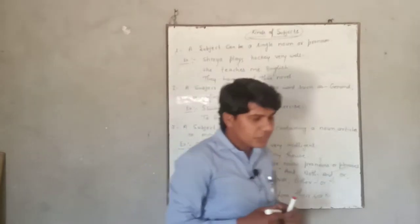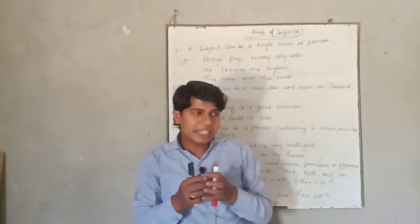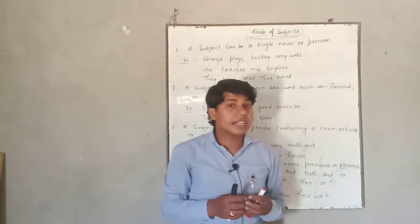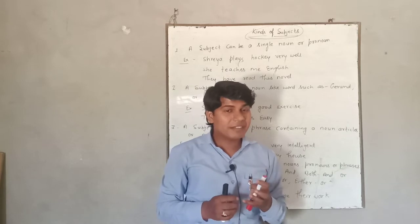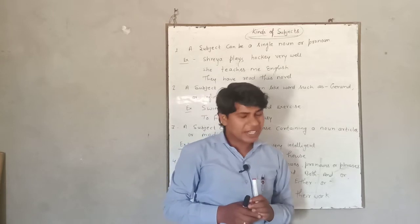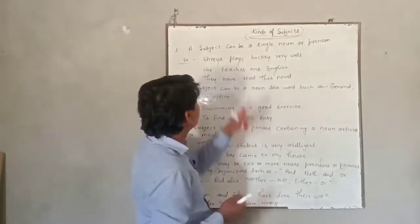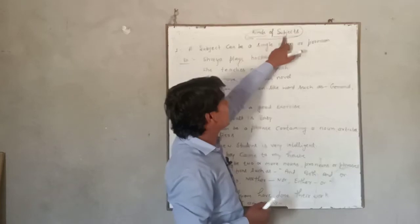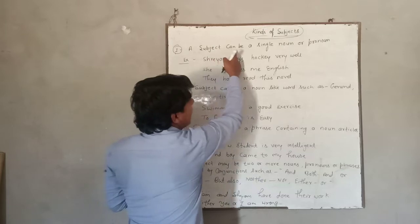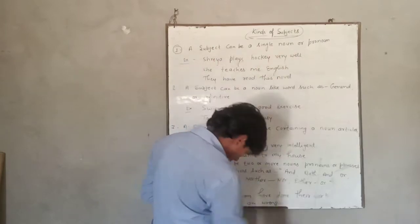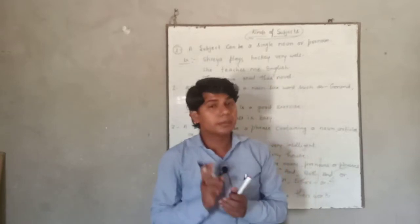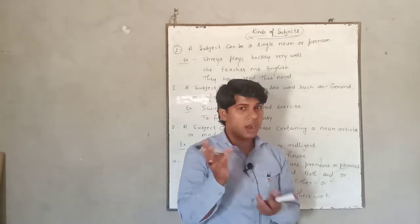Kinds of subjects means I will tell you some specific words, some particular words that are used at the place of subject — that can function and perform the work of subject. So let's start the topic. The very first point is: a subject can be a single noun or pronoun. In other words, in the place of subject, we can use a single noun or pronoun.